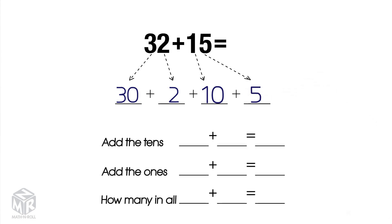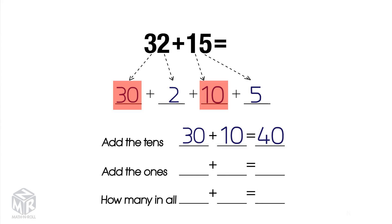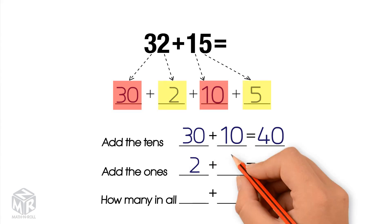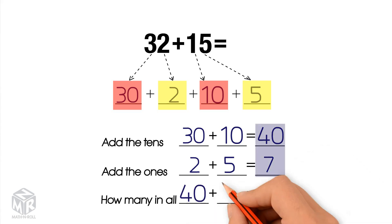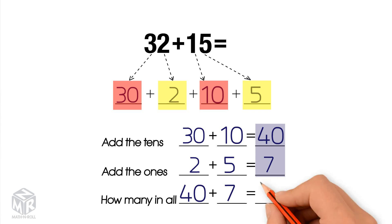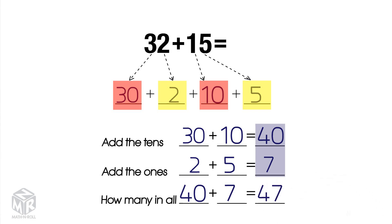Now we add the tens: 30 plus 10 equals 40. Next, we add the ones: 2 plus 5 equals 7. Then we add it all together: 40 plus 7 equals 47. So 32 plus 15 equals 47.